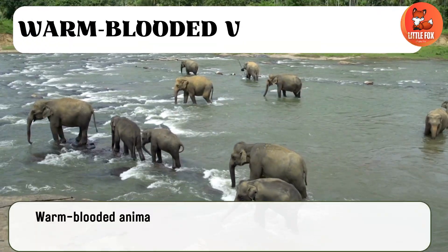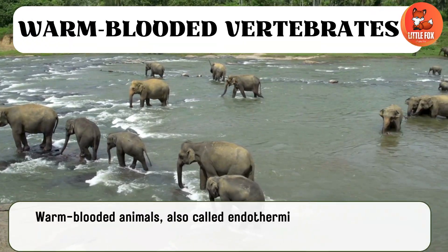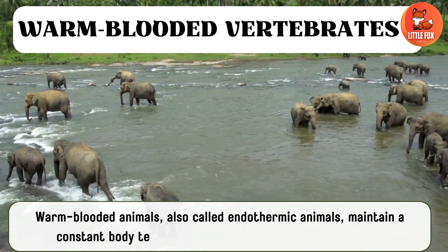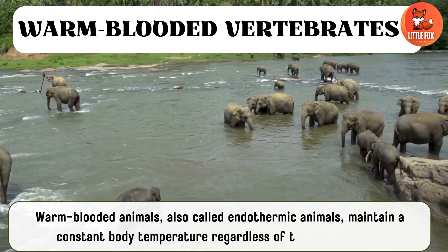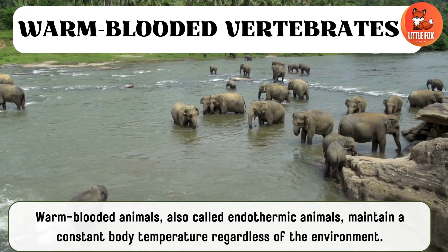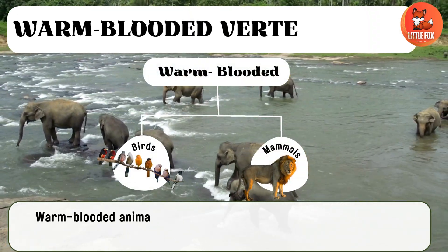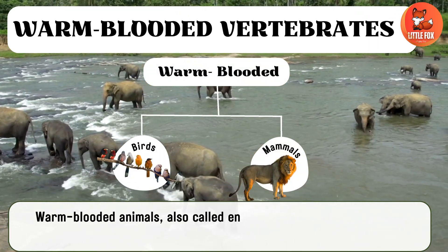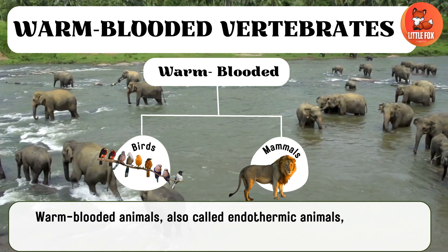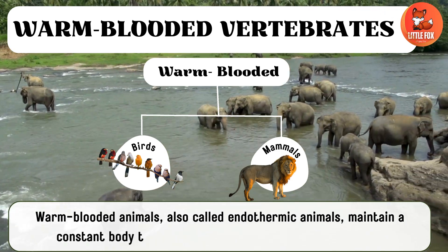Let's learn about the warm-blooded animals. Warm-blooded animals, also called endothermic animals, maintain a constant body temperature regardless of the environment. They do this through internal mechanisms, such as sweating or shivering.